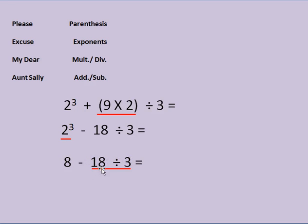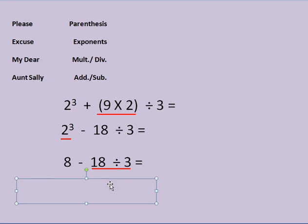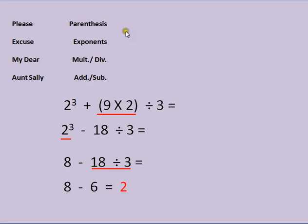Now all I have left are division and subtraction, and division comes before subtraction in the order of operations. So 18 divided by 3 is 6. I simplify again: 8 minus 6, and the answer is 2. So as you see — parentheses, exponents, multiplication, division, addition, subtraction. When you get one of these longer number sentences, you figure out which operation to do first and just keep simplifying until you have one answer left.